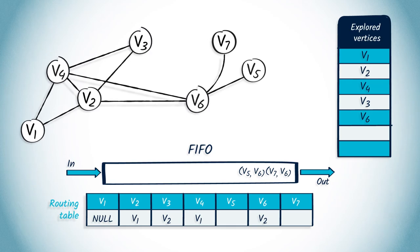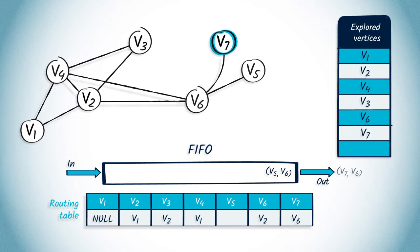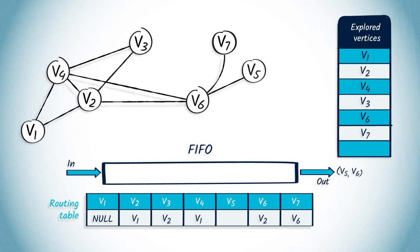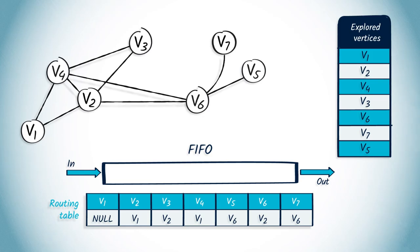Now we remove V7 with V6 as parent from the FIFO. V7 was not previously explored, so we mark it and update the routing table. The only neighbor of V7 is V6, which was previously explored. Finally, we pop V5 with V6 as parent. V5 is not in the list of explored vertices, so we add it and update the routing table. V5 does not have any unexplored neighbors. The queuing structure is now empty, so the algorithm finishes. We've now successfully traversed the graph using BFS. That's how you can use queuing structures to implement DFS and BFS. Thanks for watching — I hope you enjoyed learning about queuing structures. That's the end of this week's lessons.